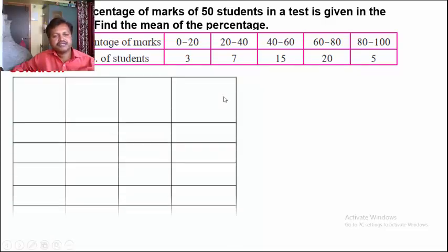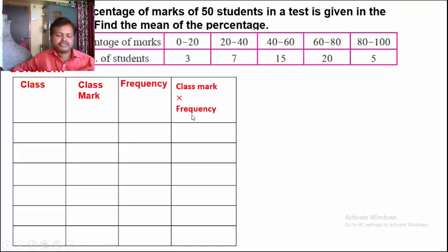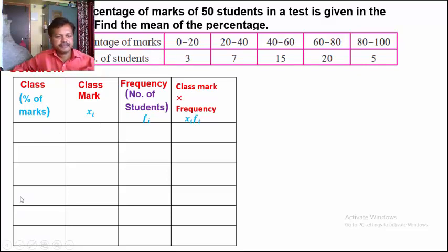First make a table containing four columns. In the first column write Class (percentage of marks), second column Class Mark (Xi), third column Frequency (number of students, denoted by Fi), and fourth column Class Mark into Frequency (Xi into Fi). The classes are: 0 to 20, 20 to 40, 40 to 60, 60 to 80, and 80 to 100.